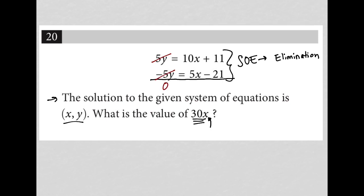Then I have 10x plus 5x, which equals 15x. Then I have 11 plus negative 21, which would be negative 10. So the equation that comes out of this is 0 equals 15x minus 10.